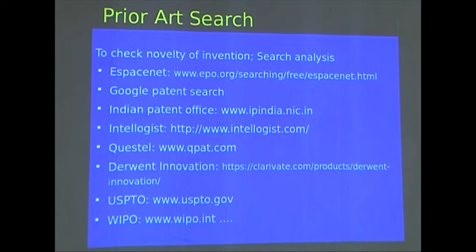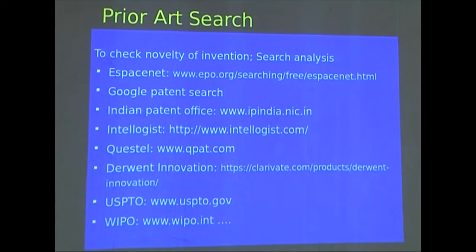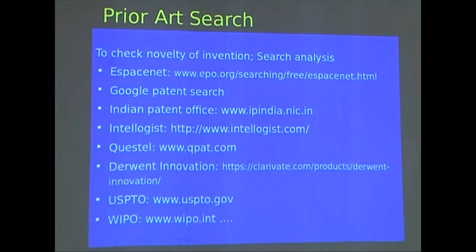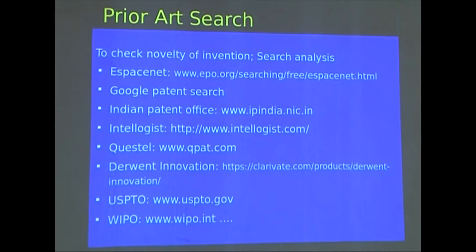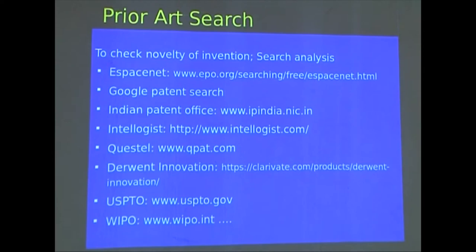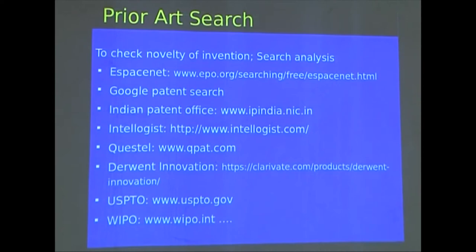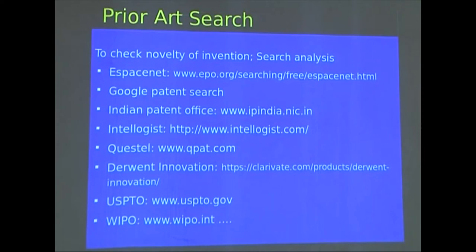Prior art search is important to decide whether your work is novel. It allows you to search the literature — both freely available public domain information and paid databases — to see whether your work has already been done by someone else. There are various sites, mechanisms, and databases, some free and some purchased on license, to check whether your work is novel.